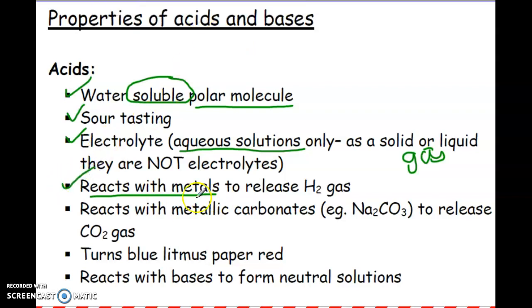Acids can also react with any metallic carbonate. Carbonate is a polyatomic ion matched with a metal. When an acid reacts with a metal carbonate ionic compound, carbon dioxide gas can also be produced as a result of that. So these are just unique properties that happen to be with acids.